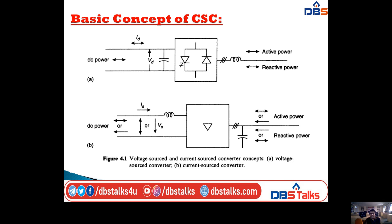In the first diagram we have a converter box which consists of a turn-off device in parallel with a diode. On the right side we have one reactor or inductor, and on the left side we have one capacitor. This circuit involves DC power, DC voltage, DC current, and active and reactive powers respectively, all flowing in both directions. This is for the voltage source converter. The second diagram is for the current source converter.